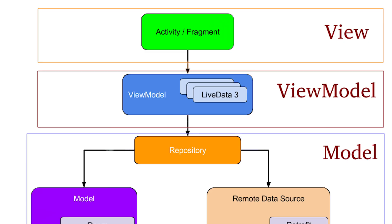Suppose a user clicks a button — that is considered a user action, and this user action goes to the ViewModel. The ViewModel, based on that, goes to the Model, fetches some information, and provides that information to our View. So this is the basic flow of our MVVM architecture.